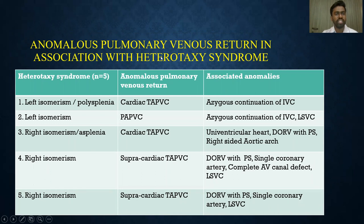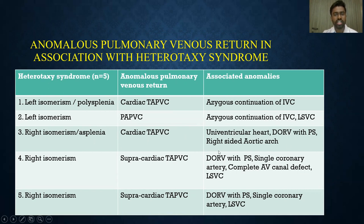Regarding the association of anomalous pulmonary venous return with heterotaxis syndrome, we had 5 patients of heterotaxis syndrome among 60 cases, out of which 2 were left-sided isomerism and 3 were right isomerism. One left isomerism patient had cardiac TAPVC with azygous continuation of IVC; another had cardiac TAPVC with azygous continuation of IVC and persistent LSVC. Among right isomerism cases, one patient had cardiac TAPVC with univentricular heart, double outlet right ventricle with pulmonary stenosis, and right-sided aortic arch. Another right isomerism patient with supracardiac TAPVC showed double outlet right ventricle with pulmonary stenosis, single coronary artery, and persistent left superior vena cava. One patient also showed complete AV canal defect.